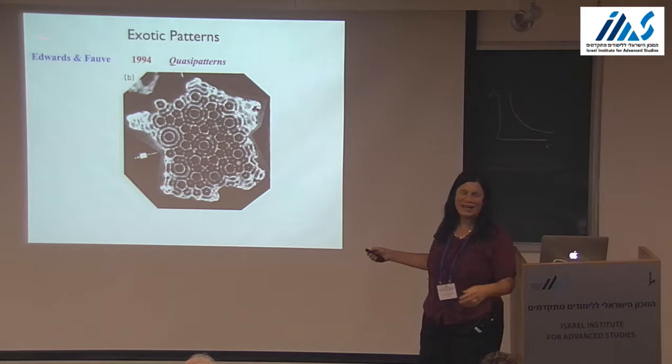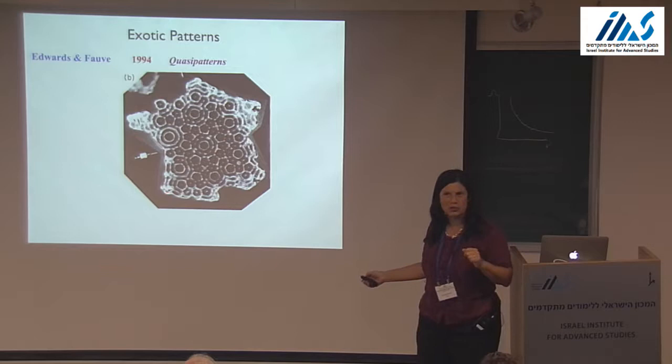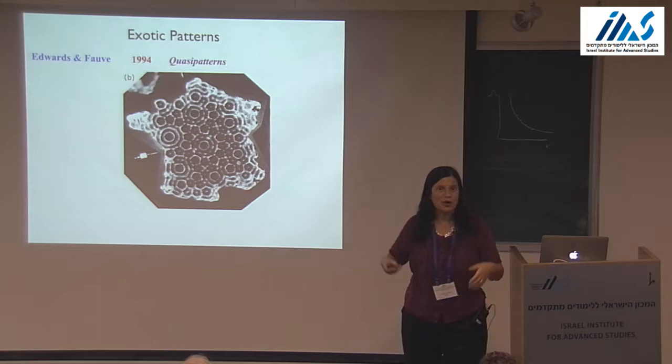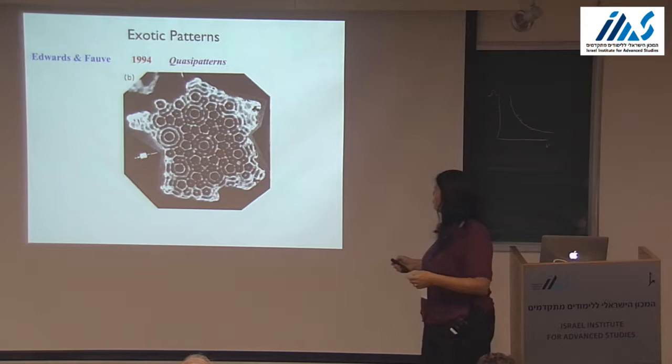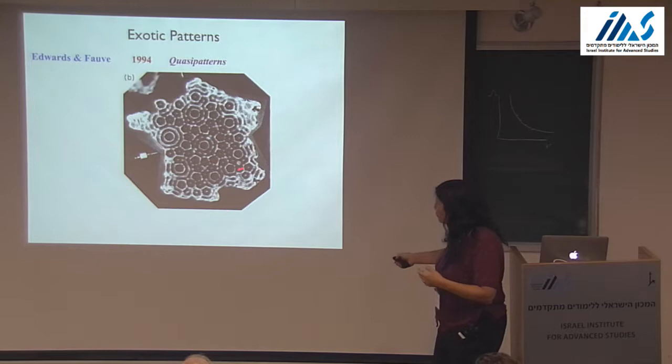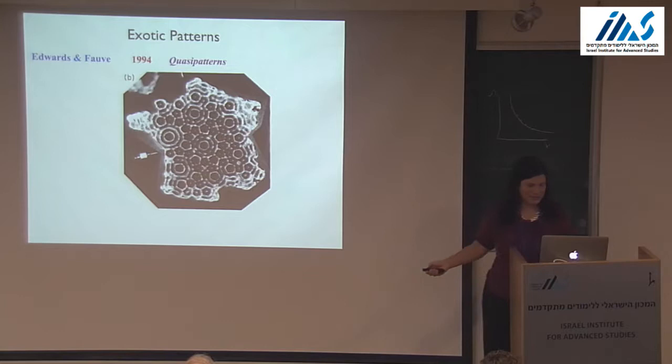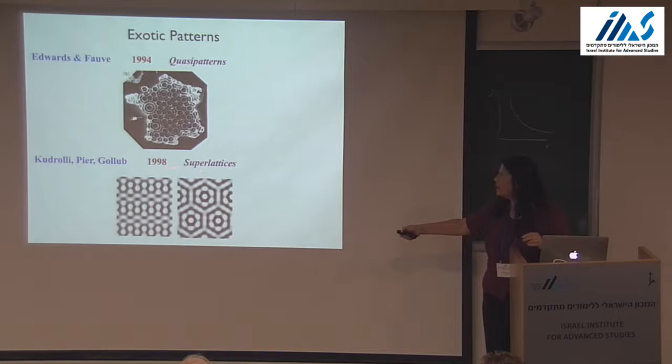Edwards — a very original fellow — asked the machine shop to make a container the shape of France. The machinist said 'oh, you mean hexagon-shaped,' because in France, France is called l'hexagone. He said no — the actual shape of France, with Brittany and the whole thing. And there he produced the quasi-patterns. This was followed later by super-lattices by the group Kudrolli-Pier-Gollub in 1998.